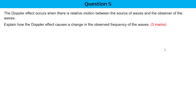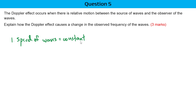The Doppler effect occurs when there is relative motion between the source of waves and the observer. Explain how the Doppler effect causes a change in the observed frequency. The first thing you need to mention is that the speed of the waves is constant — that's key to understanding the Doppler effect.